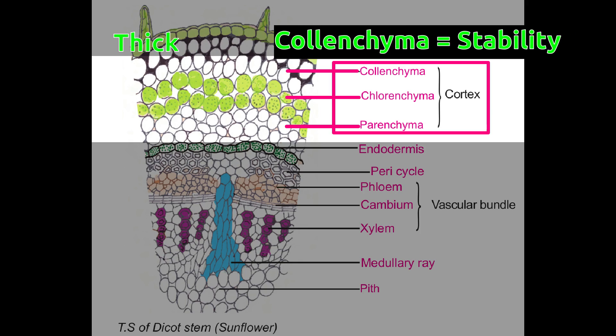Collenchyma is the outer part of cortex. It is thick and provides support to the plant.